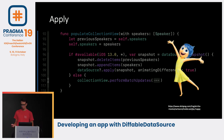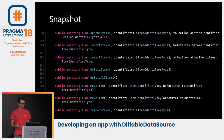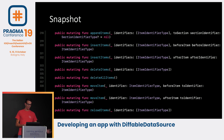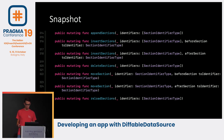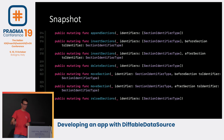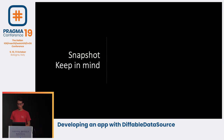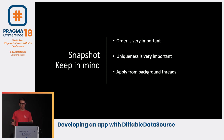Looking at the snapshot's available methods: we can append items to a section, before an item, or after an item. We can delete items or delete all of them. We can move items before or after another item, and reload them. The same applies for sections — insert before, after, move, and reload. You might ask why we still have reload: if you want to expand a cell, you need to invalidate your layout or reload items. When using the snapshot's new API, order and uniqueness are very important, and if needed you can apply from background threads.